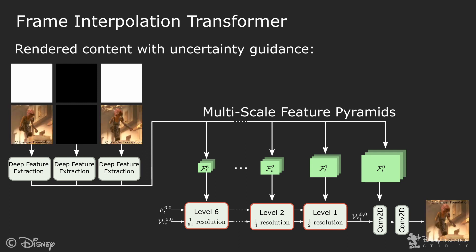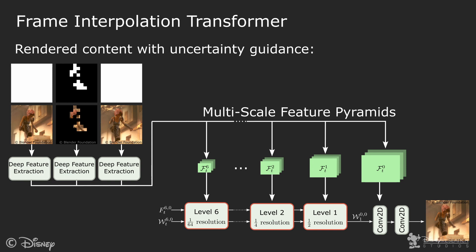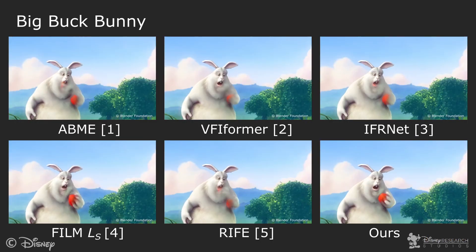For rendered content, we can use the same process, but we can also extend it by analyzing the error prediction that is produced along with the color output. If parts of the interpolation are expected to have insufficient quality, we can render those patches and use them as additional input in a second pass through the network for a higher-quality interpolation. We now show visual interpolation examples taken from our user study. For a fair comparison with other methods, no additional inputs were used here.